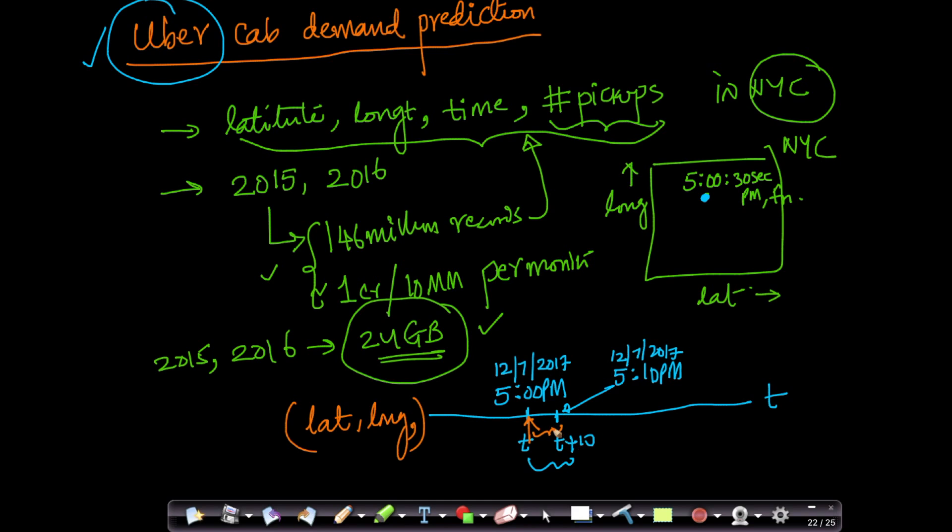I want to predict how many cabs or how many customers will request a cab in the next 10 minutes at this given location. Because if I can predict that well, I can have - suppose for this given location if I know that between 5 p.m. and 5:10 p.m. I'll have 100 pickups, I'll have 100 cabs in the vicinity of this lat long location who can come and quickly pick up customers.